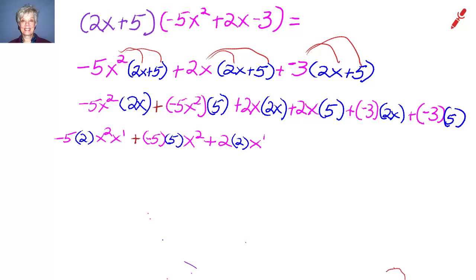We multiply 2 and 2 together, then x¹ times x¹. We multiply 2 times 5, and then x which is x¹. We multiply -3 times 2 times x¹, and we multiply -3 times 5, which is -15.